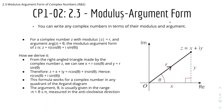Here's a quick note: you can write any complex number in terms of its modulus and argument — hence it's called the modulus argument form. For a complex number z with modulus |z| = r and argument arg(z) = θ, the modulus argument form is z = r(cosθ + i sinθ).